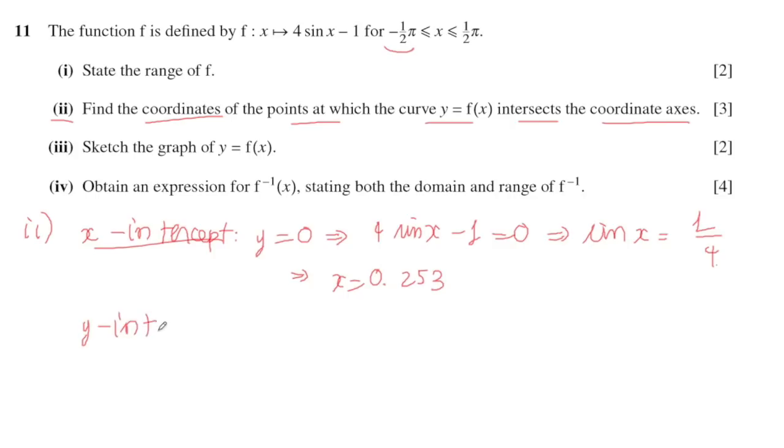The y-intercept means you find the value when x equals 0. When x equals 0, you calculate 4sin(0) - 1. Sin(0) is 0, so 4 times 0 minus 1 will equal minus 1. The y-intercept is (0, -1).